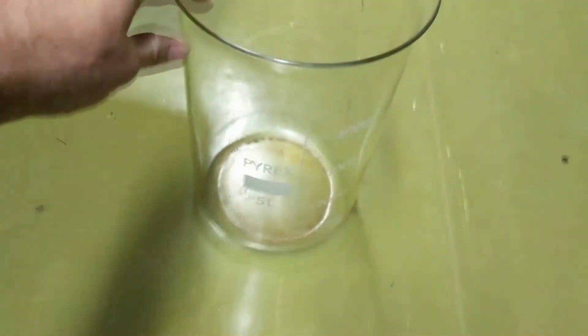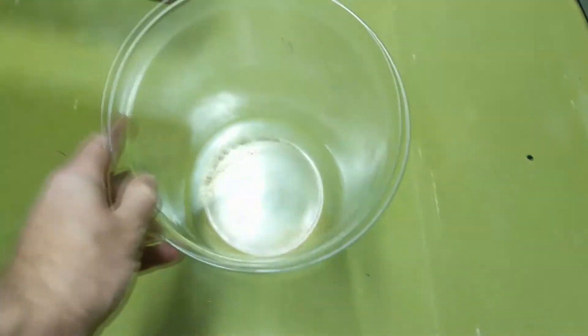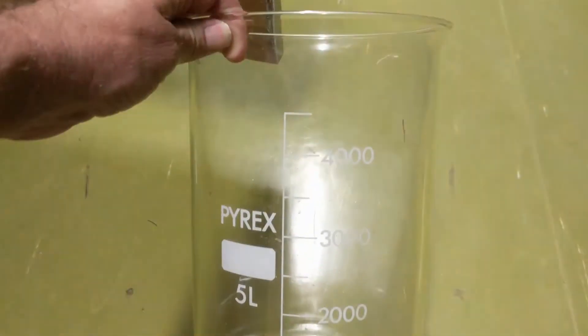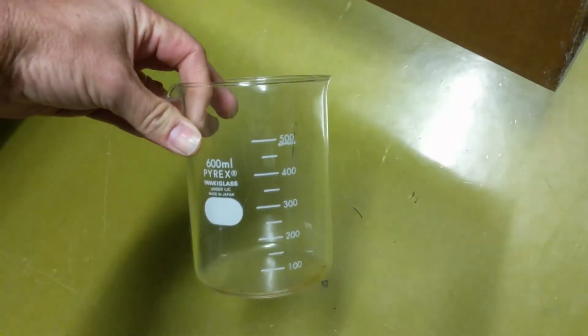We'll just grab that one. There it is. So that's the beaker we normally use. And it's huge. So you can see it's 4 litres plus, probably 5 litres. And for smaller jobs we've just got the smaller one.